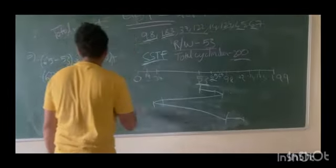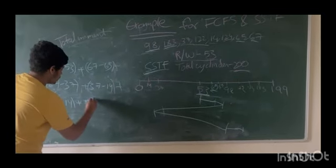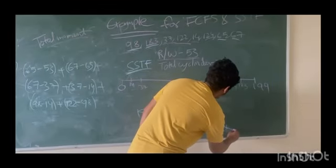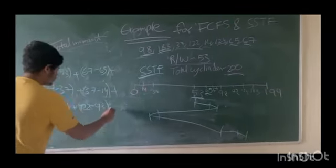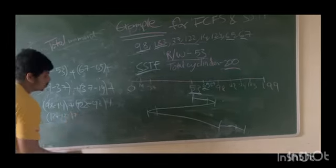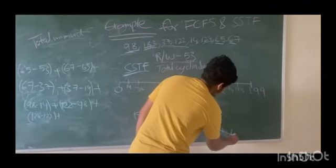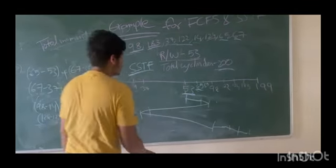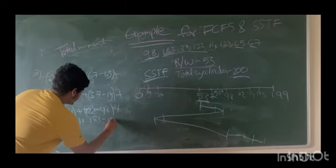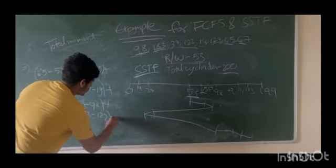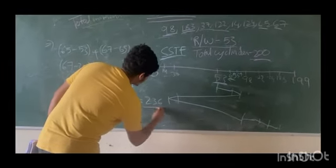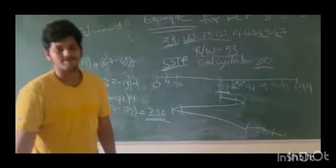Next is 122, so 122 minus 98. Then 124, so 124 minus 122. Next is 183, so 183 minus 124. When we total all the head movements, we get 236. Thank you.